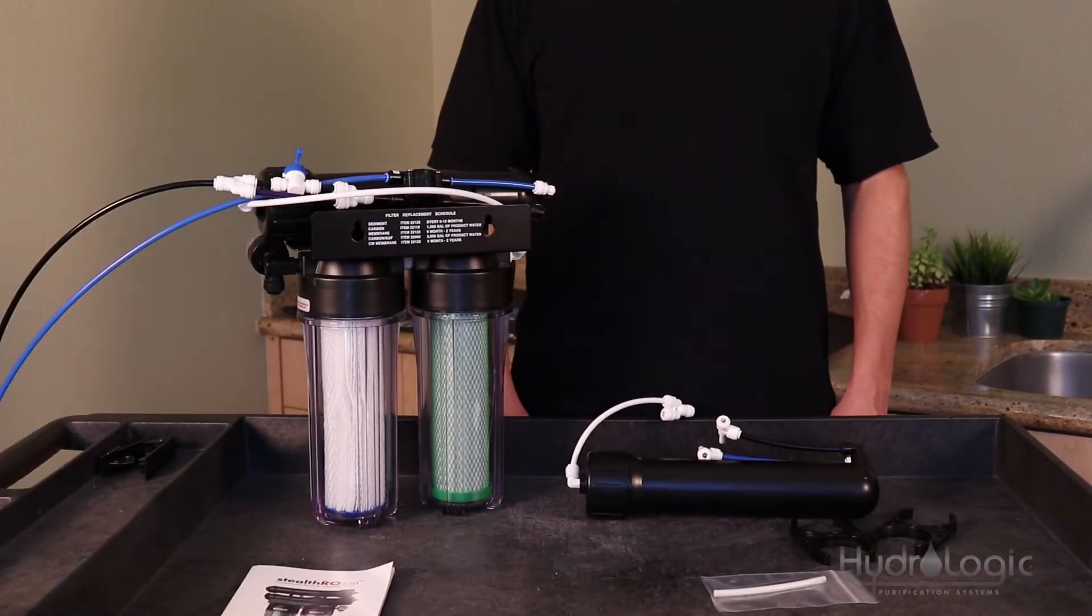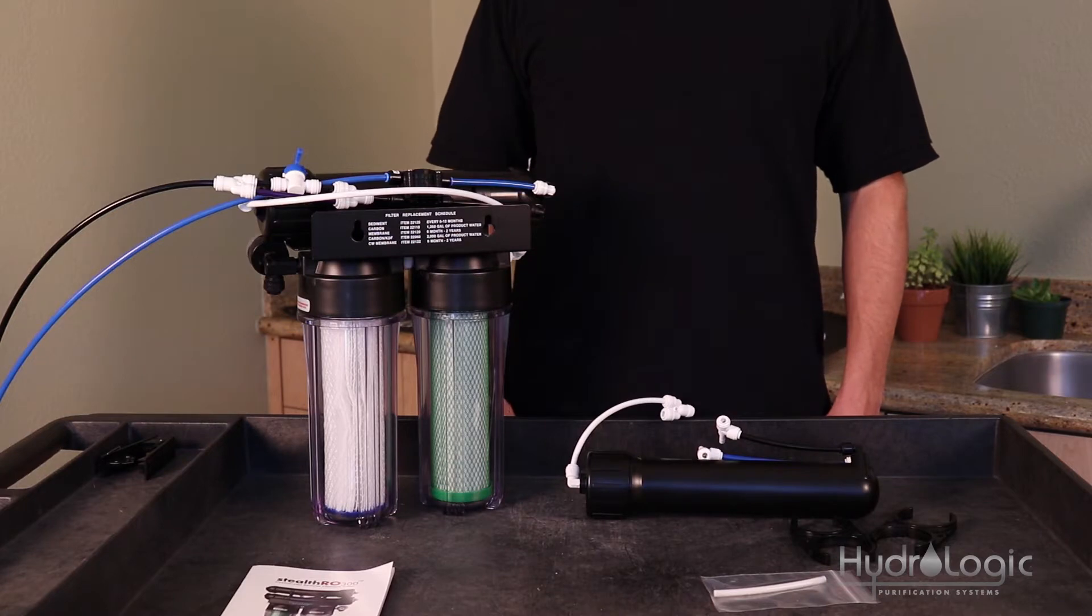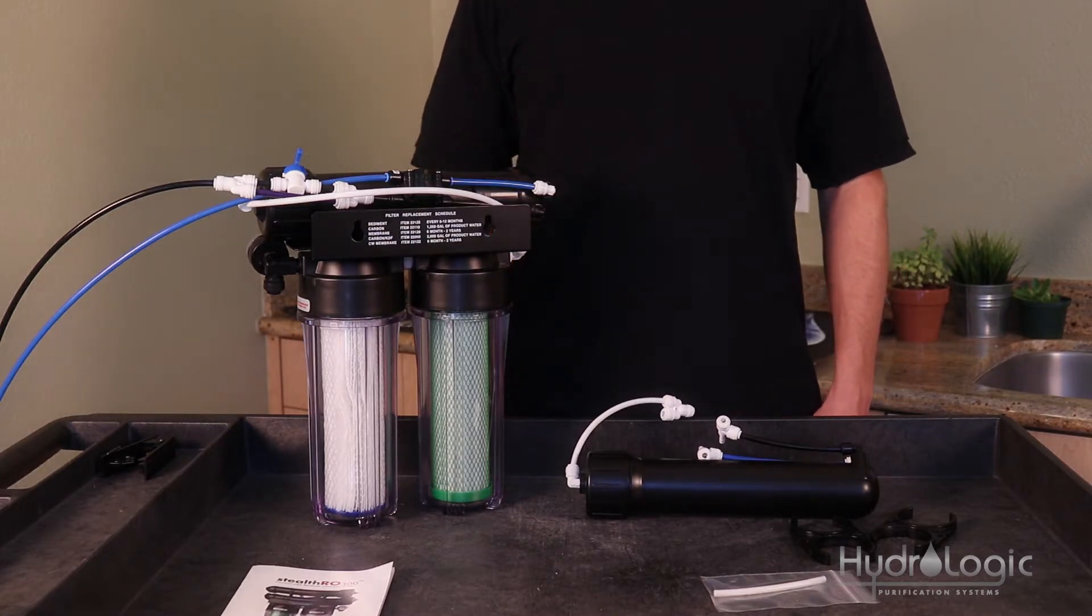Okay, today we're going to show you how to install the Stealth 150 to Stealth 300 upgrade kit. By adding an extra 150 gallon a day membrane, you're going to be able to double your flow rate.